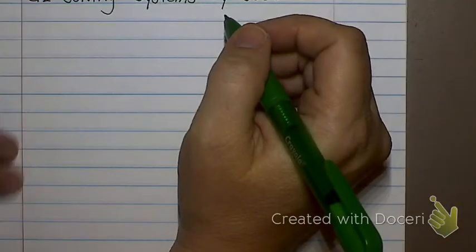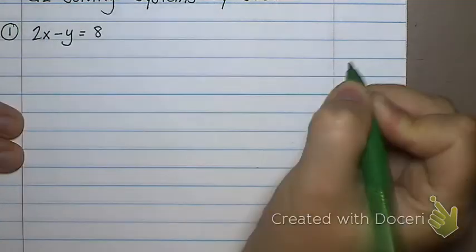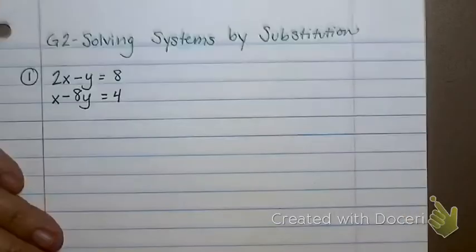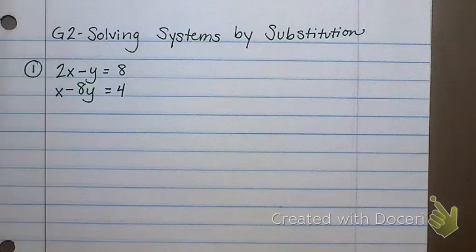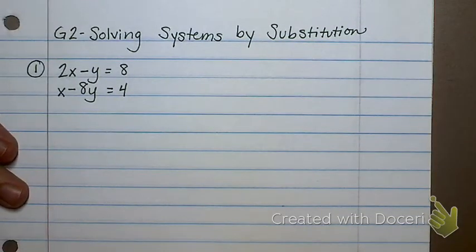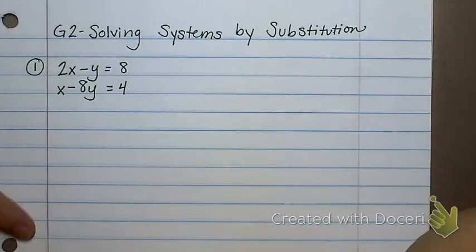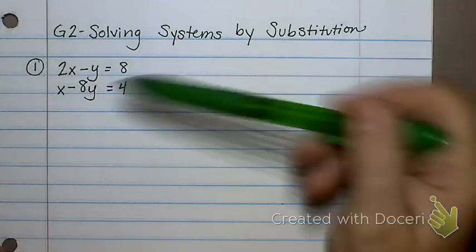So I'm going to start with this one right here. 2x minus y equals 8, and x minus 8y is equal to 4. So when I have a system of equations, I have two equations, and this substitution method means that at some point I'm going to take something out of the equation and I'm going to substitute or replace with something else. So here's my first step on that sheet. It says something about taking your equations, pick one of your equations, and get one of the letters by itself. Now, the easiest letter to get by itself is going to be a letter that is almost by itself already, meaning that it does not have a number in front of it, and if at all possible, it's positive.